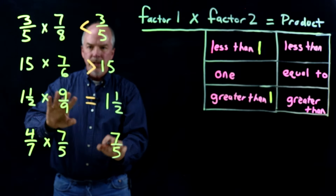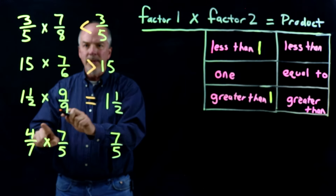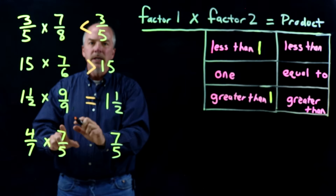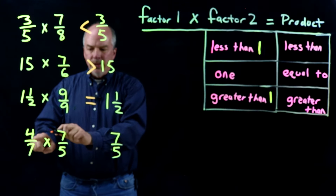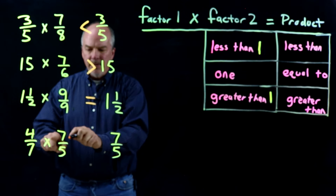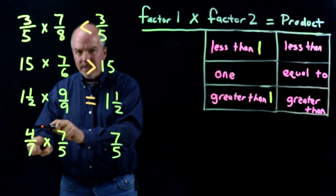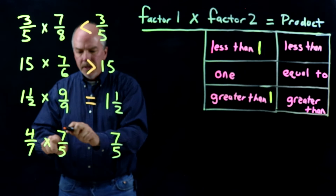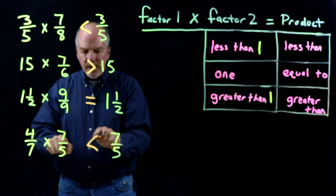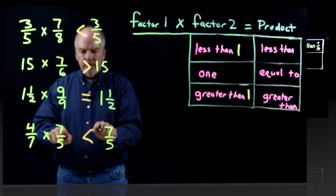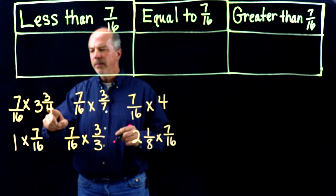Notice here the question has been turned — we're not asking about the first factor now, we're asking about the second factor. So be careful and really look at which factor you're being asked about. In this case: 4 sevenths times 7 fifths. The question is what happens to 7 over 5. Well, 4 sevenths is less than 1, so my product will be less than 7 over 5.